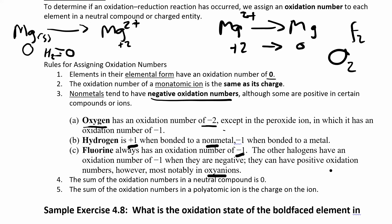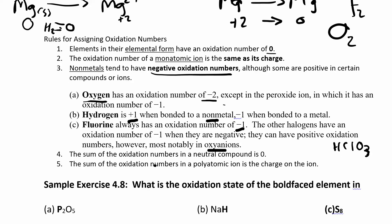For example, HClO3 — we can figure out the oxidation number of chlorine, and it's probably going to be positive because you have so many oxygens and oxygen is minus two. This final rule is that all the oxidation numbers have to add up to zero in a neutral compound. You follow the oxygen rule before the halogen rule. If you add up all the oxidation numbers in a polyatomic ion, the sum has to equal the charge on the ion.